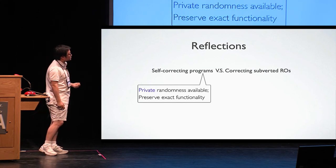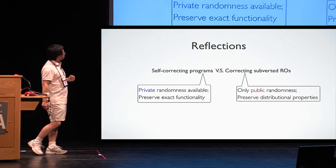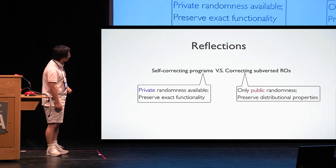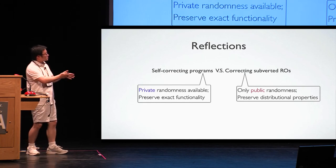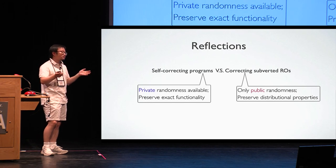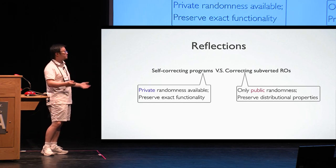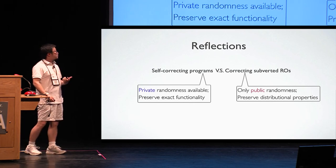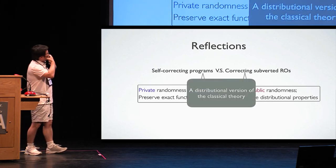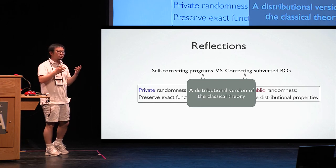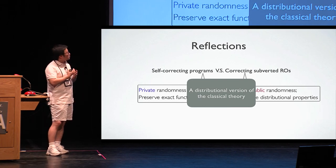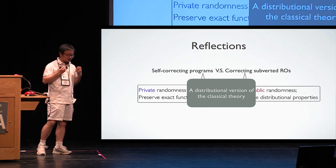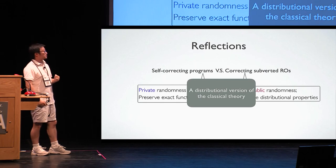But on the other hand, we need to preserve the exact functionality. If we compute x plus 2, we still need to compute x plus 2. But in our setting, we don't have the luxury of private randomness to use, as we explained, because random oracle is a public object. But on the other hand, we don't really need to preserve the exact functionality. The SHA-256, after wrapping, might not even be SHA-256. But we preserve all the distributional properties. In some sense, we can view our result is kind of distributional version of the classical theory. And I hope this perspective might give some more inspiration that we may consider developing a different path of the classical theory.